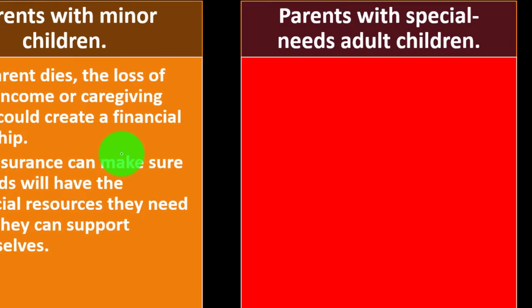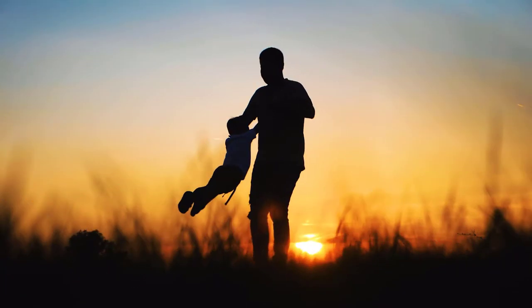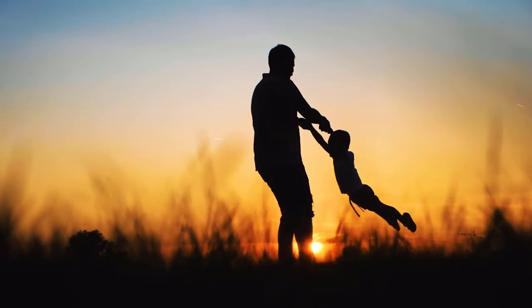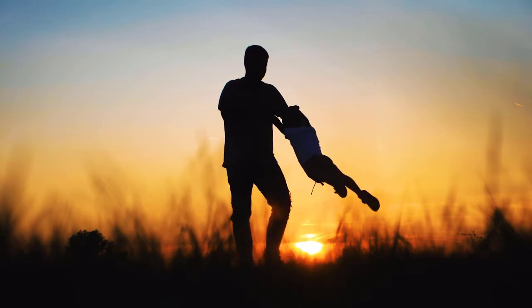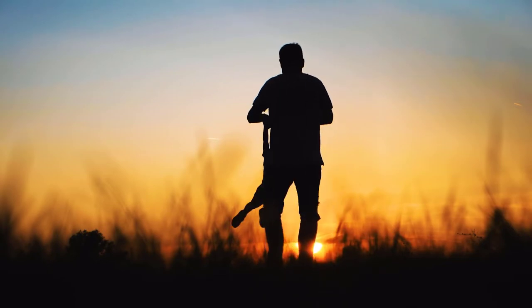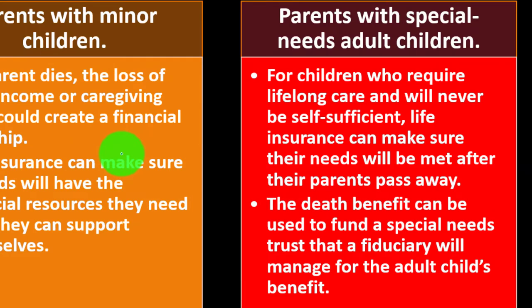Parents with special needs adult children: for children who require lifelong care and will never be self-sufficient, life insurance can make sure their needs will be met after their parents pass away. The death benefit can be used to fund a special needs trust that a fiduciary will manage for the adult child's benefit.